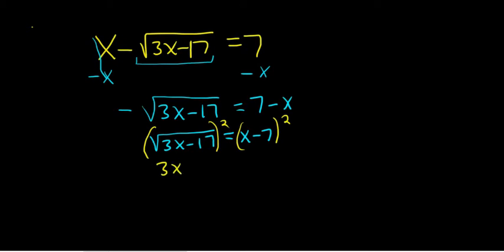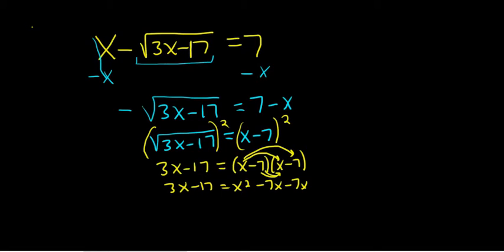So we end up with 3x minus 17. And then we have to multiply this out. One way to do that is to just write it twice and FOIL. So we have 3x minus 17. x times x is x squared. And then x times negative 7 is negative 7x. Then negative 7 times x is negative 7x. And negative 7 times negative 7 is 49. So we took the x and multiplied by x, and then took the x and multiplied by negative 7. Then did the same thing with negative 7.